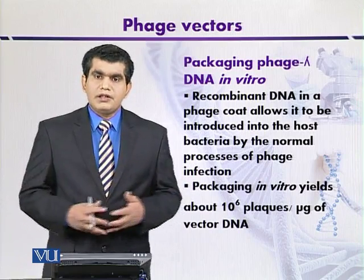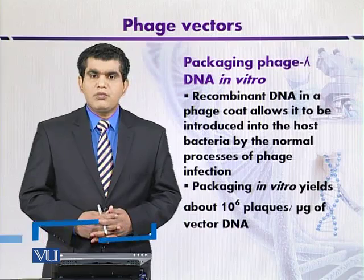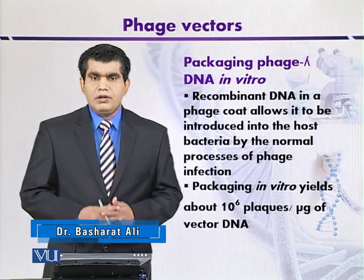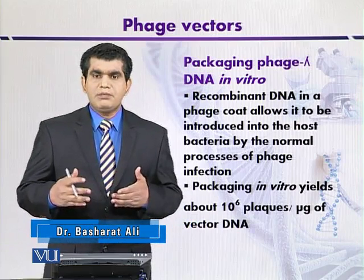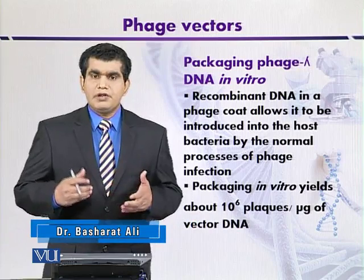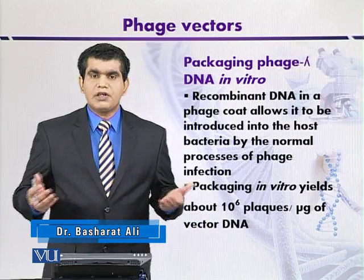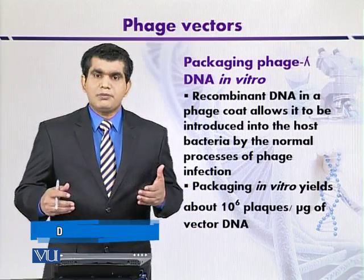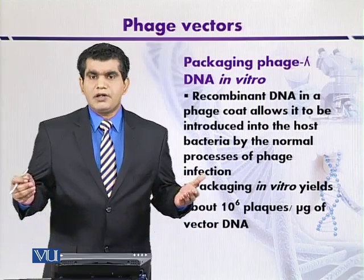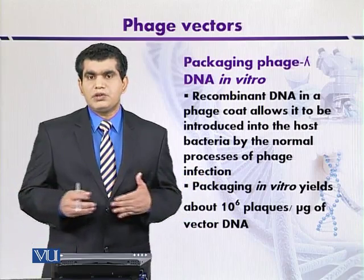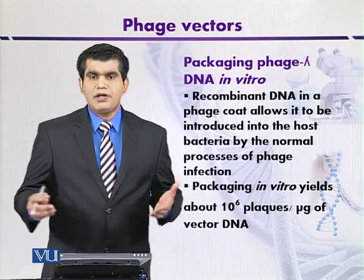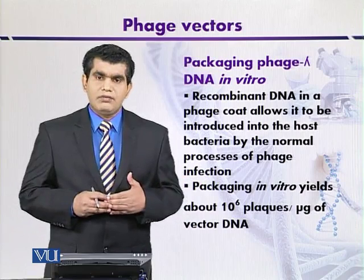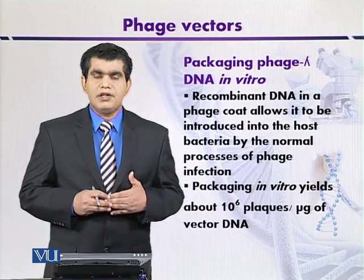On the other hand, if we use modified derivatives, then the frequency may be reduced. For example, the plaque formation may be up to 10^3 to 10^4 plaques per microgram of vector DNA.